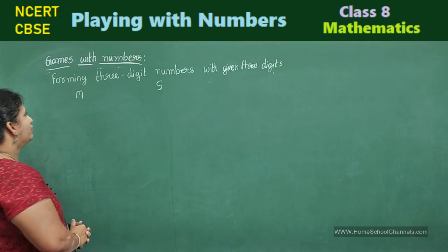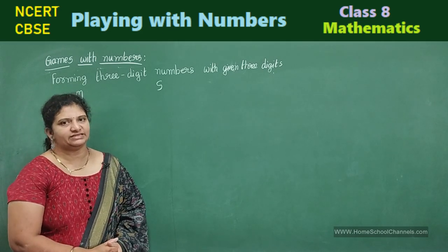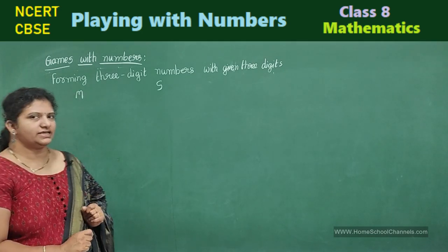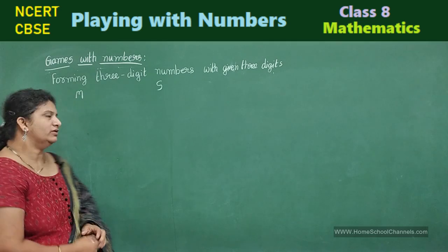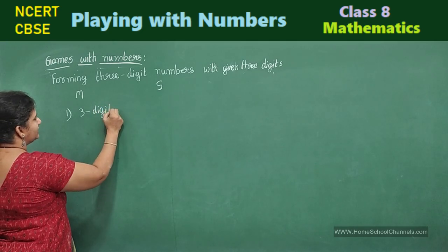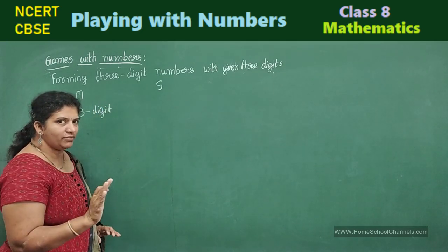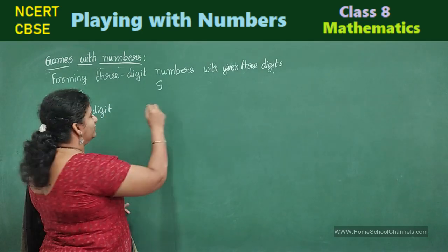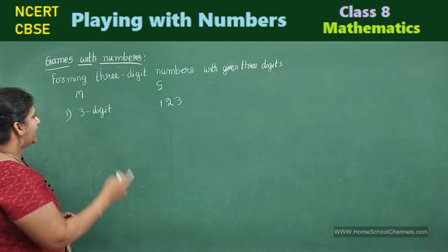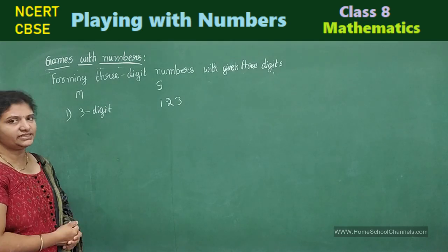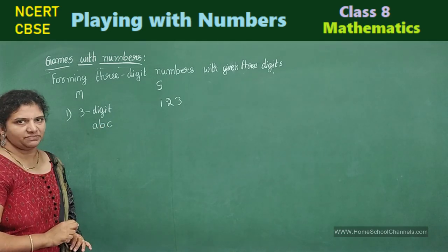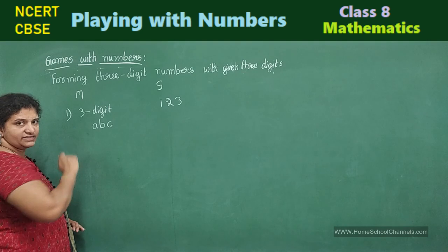Now, let us see the next game. Forming three digit numbers with given three digits. Now, it's Meenakshi's turn to ask Sundaram. So, now, Meenakshi says, Sundaram choose a three digit number. What is the first question she says? She asked him to choose a three digit number. Sundaram won't reveal the number. But, to understand, I will write here. Sundaram has taken 123. And now, she says, rearrange the three digit number. Suppose, if you have taken three digit number as ABC. Rearrange this number.